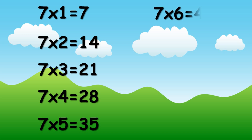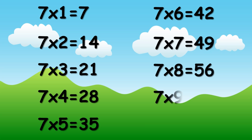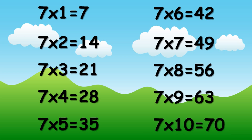Seven sixes are forty-two. Seven sevens are forty-nine. Seven eights are fifty-six. Seven nines are sixty-three. Seven tens are seventy.